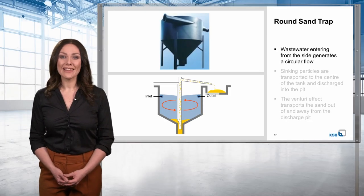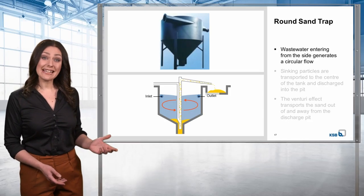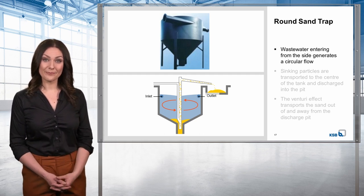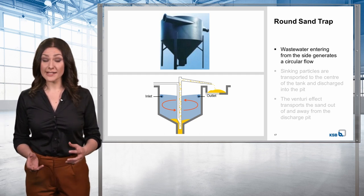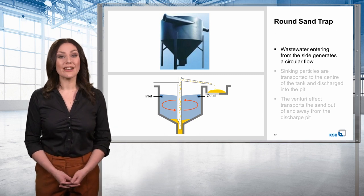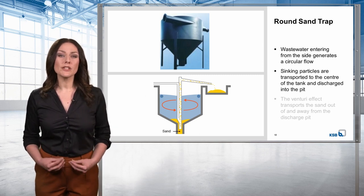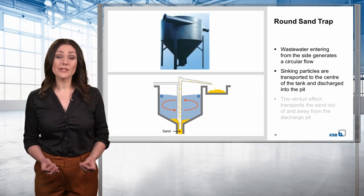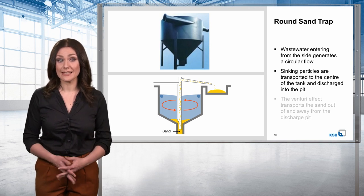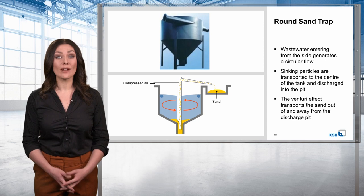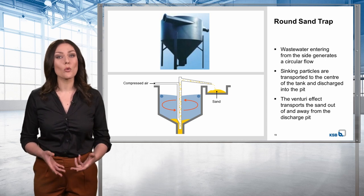In a round sand trap, the so-called teacup effect is used to separate sand particles. The wastewater entering from the side generates a circular flow. Due to the velocity distribution, sinking particles are automatically transported to the centre of the tank and discharged into the pit. The so-called venturi effect then transports the sand out of and away from the discharge pit. Generally speaking, the round sand trap is more commonly used in smaller wastewater treatment plants.